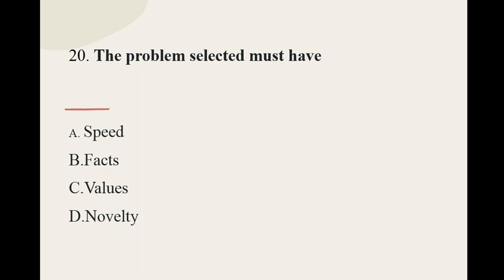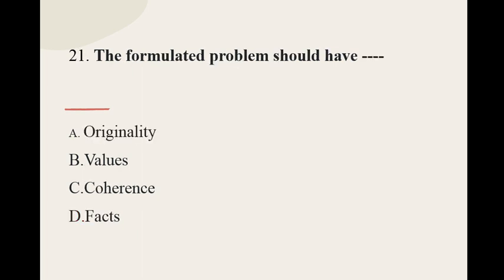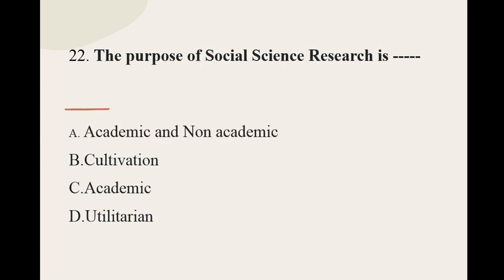Question number twenty: The problem selected must have dash — the options are: speed, facts, values, novelty. The correct option for question number twenty is novelty. Question number twenty-one: The formulated problem should have dash — originality, values, coherence, fact. The correct option is originality. Question number twenty-two: The purpose of social science research is dash — the options are: academic and non-academic, cultivation, academic.